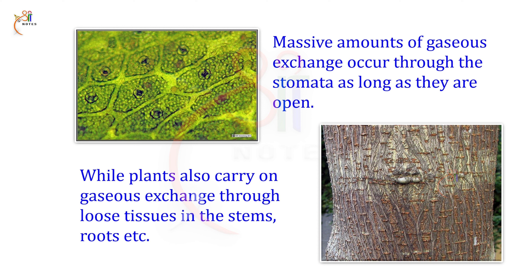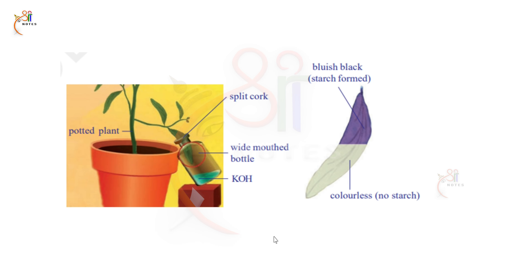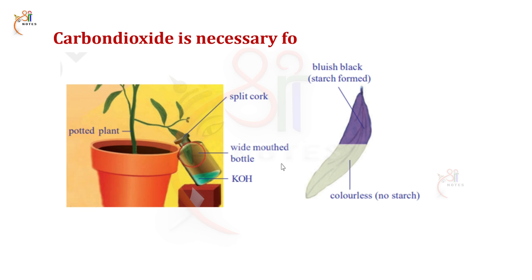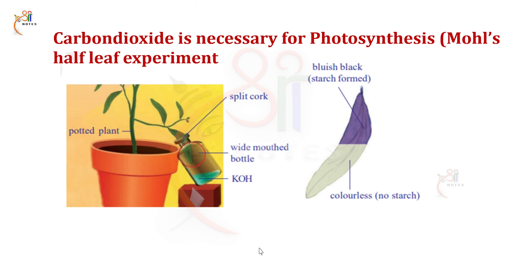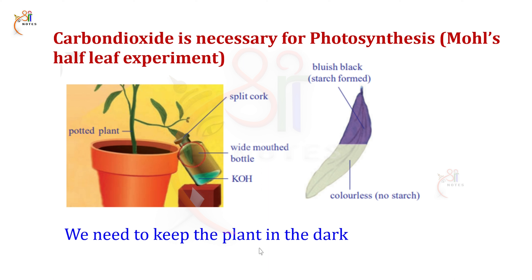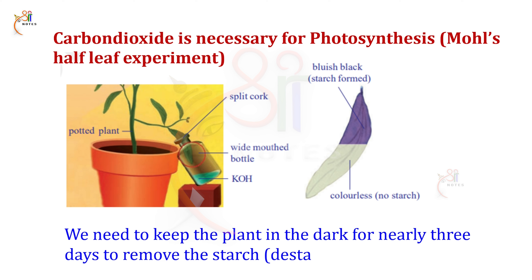First, we have to test the carbohydrates. That is why carbon dioxide is necessary for photosynthesis — we have to test it using a half-leaf experiment. We need to keep the plant in the dark for nearly 3 days to remove the starch. The leaves will be de-starched by keeping the plant in a dark place.